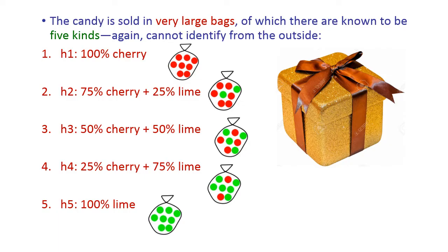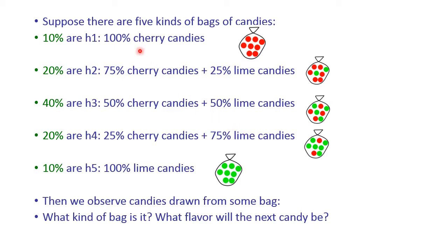There are five kinds of bags and the manufacturer produces 10% of 100% cherry candy bags and 10% of 100% lime candy bags. They produce 20% of 75% cherry and 25% lime bags, and 20% of 25% cherry and 75% lime bags. The manufacturer produces 40% of 50% cherry and 50% lime candy bags.